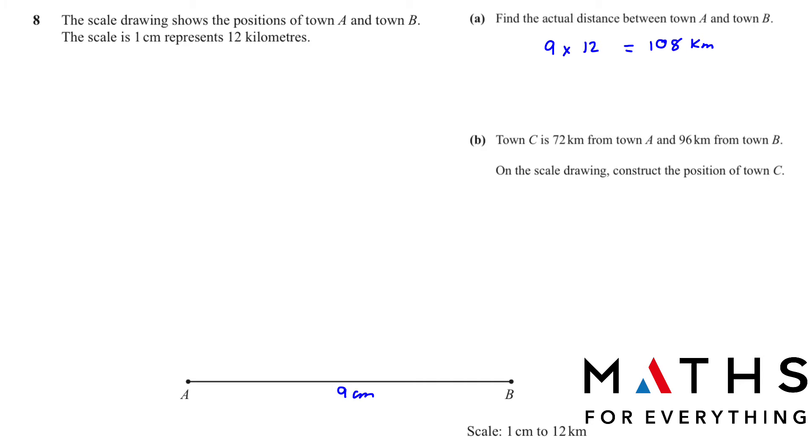Sometimes when you print the exam paper and when you are solving, maybe you may not get the same measurement that is given to you in the mark scheme. It could be because of the paper size or you know some adjustments in the printing. So it's fine. Don't worry. You just need to understand. Whatever you get you multiply by the number given here.